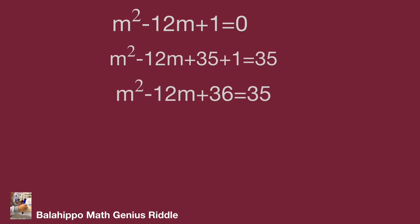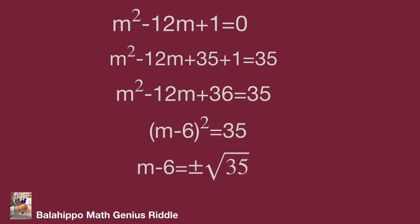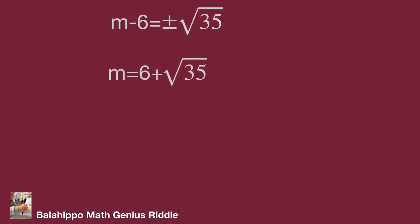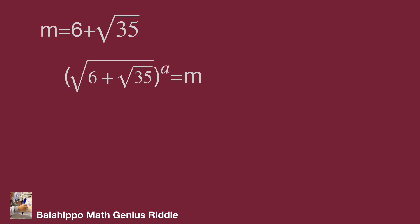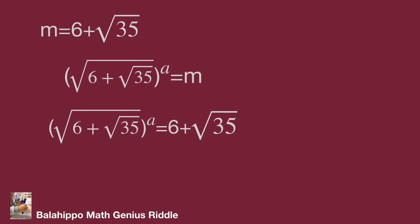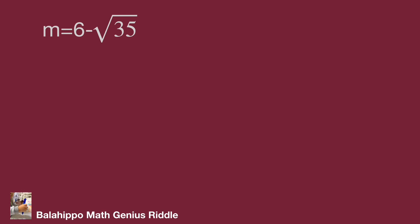So I add 35 to both sides of the equation. Finally, a new equation: (m − 6)² = 35, so m − 6 = ± √35. Then m = 6 + √35 and m = 6 − √35. When m = 6 + √35, going back to our definition — the quantity (√6 + √35) to the power of a equals m — substituting m by 6 + √35 gives (√6 + √35) to the power of a equal to 6 + √35.